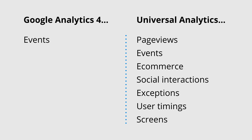Google Analytics 4 properties are designed to provide greater flexibility in the way you track the actions taking place on your website and in your app. Rather than being built around page views, Google Analytics 4 properties are built around a flexible event structure where you can send all different types of information to your reports.